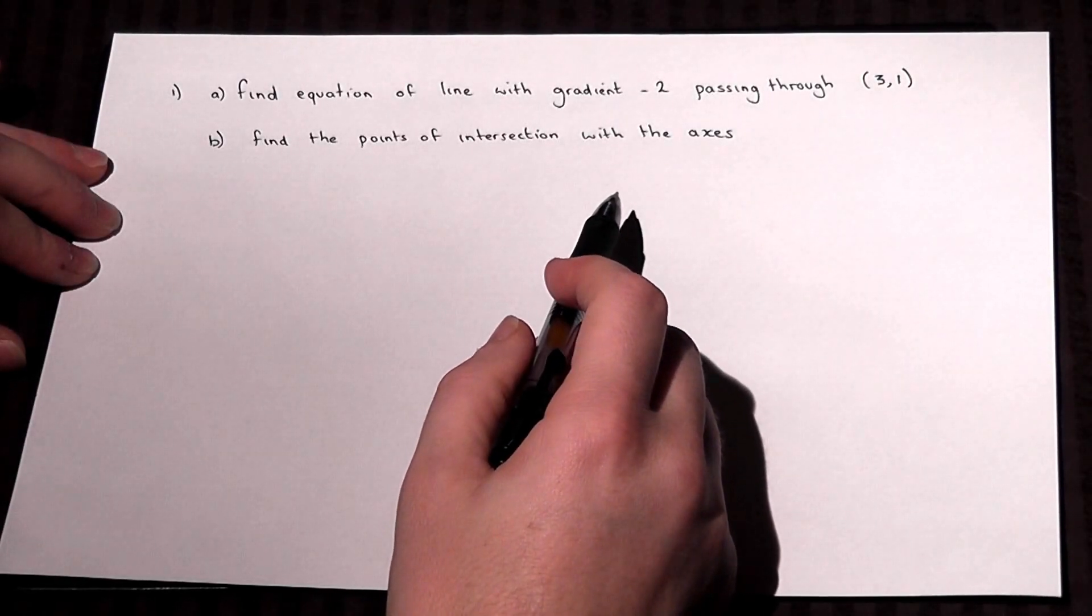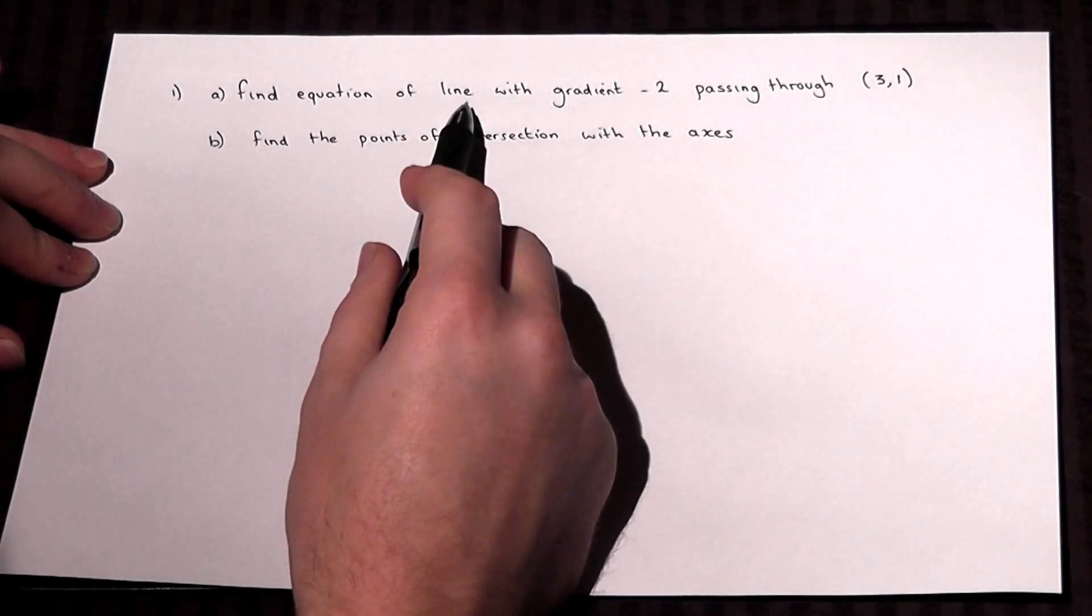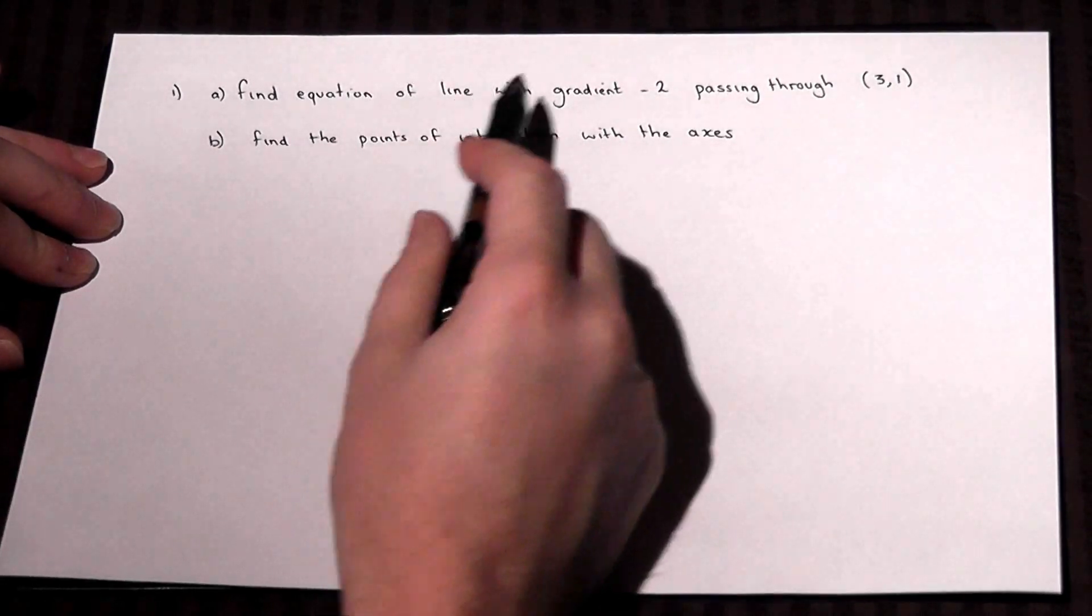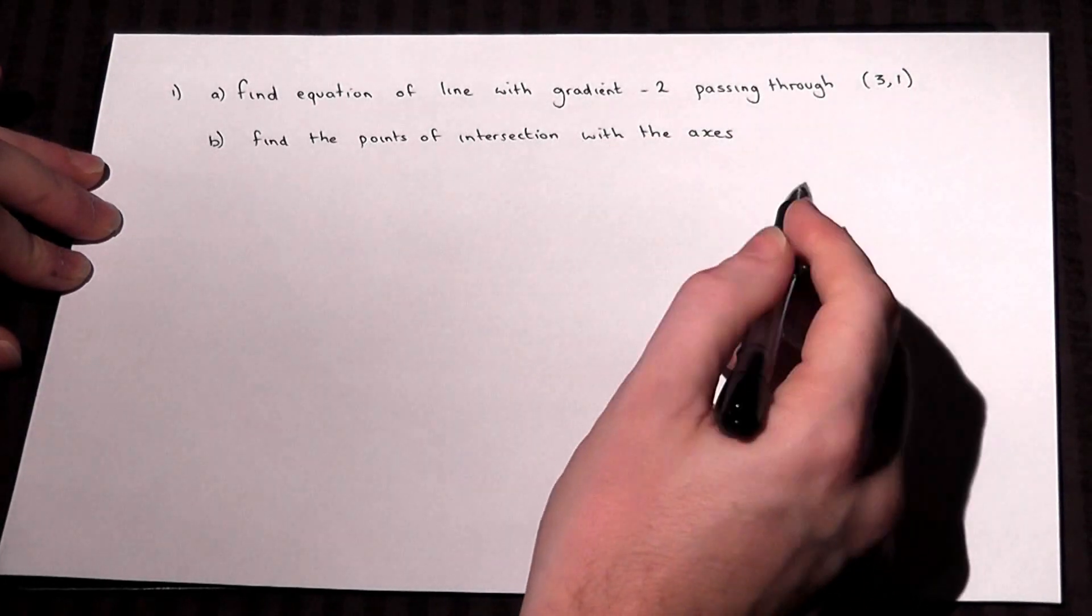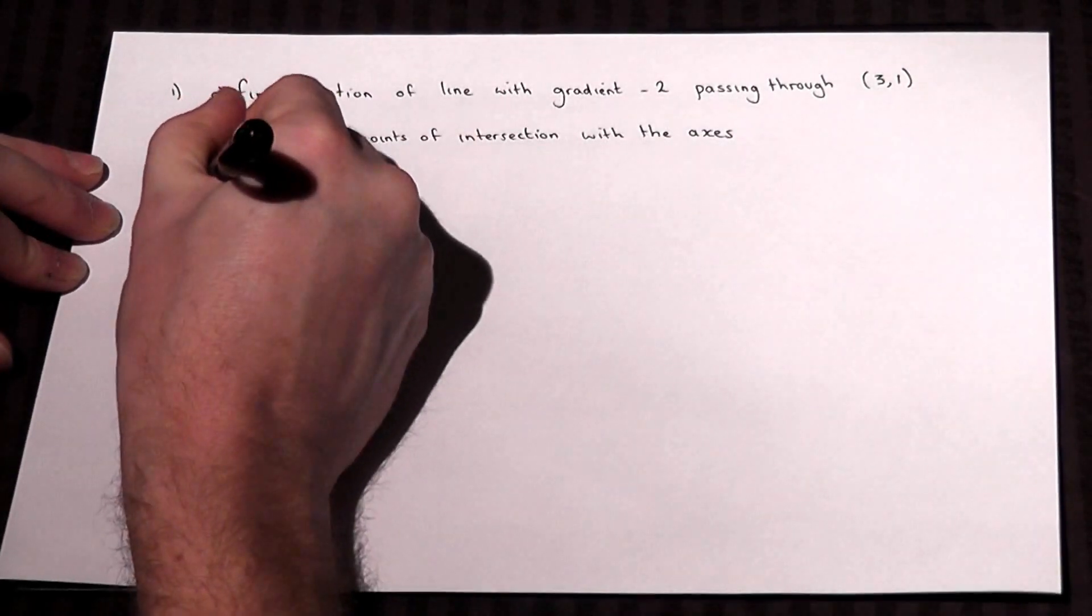The first part asks us to find the equation of the line which has a gradient of minus 2 and which passes through the coordinate (3, 1). Now, for part A,